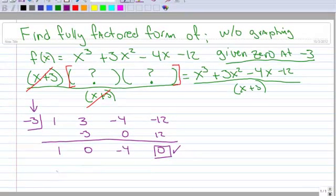Here's my resulting polynomial: x squared minus 4. So now I know somewhere within, if I multiplied these two factors together, I would get x squared minus 4.